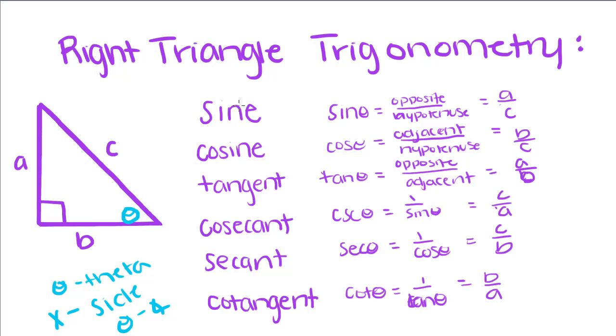So, we have six trig functions: sine, cosine, tangent, cosecant, secant, and cotangent. I know it sounds kind of crazy, but it's really just talking about the sides of the triangle and their ratio to one another.